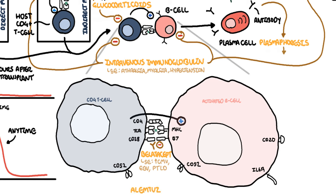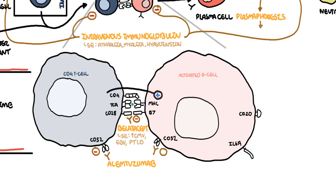Alemtuzumab is a humanized monoclonal antibody against CD52 on lymphocytes. This then mediates lymphocyte destruction through a number of mechanisms. The side effect of Alemtuzumab is the autoimmune phenomenon. It increases the risk of things such as ITP, Graves' disease, and anti-GBM.